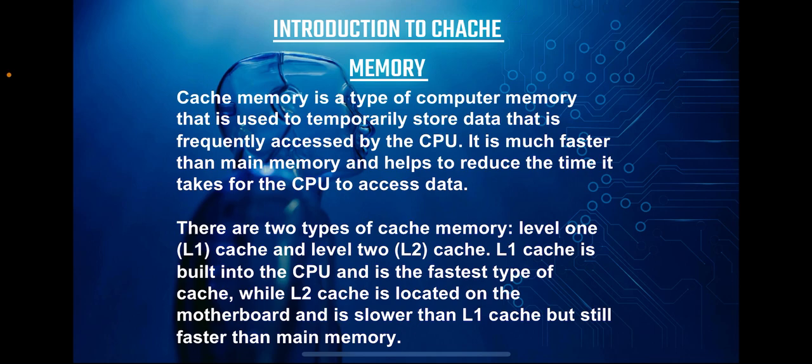Moving on to L2 cache, also known as secondary cache. While not as fast as L1 cache, it still provides a substantial performance boost. L2 cache is located on the motherboard, separate from the CPU. Although it may take a bit longer to retrieve data from L2 cache compared to L1 cache, it is still significantly faster than accessing data from main memory.